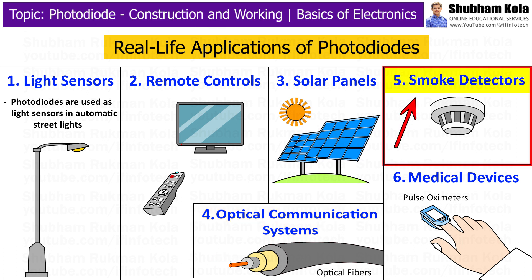The fifth application is smoke detectors. Photodiodes are also used in smoke detectors. In these devices, a photodiode is paired with a light source. Normally, the light source does not hit the photodiode directly. But when smoke enters the detector, it scatters the light onto the photodiode, causing it to generate a current and trigger the alarm.